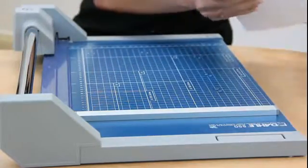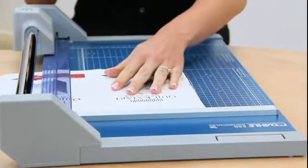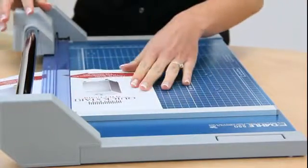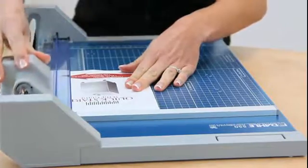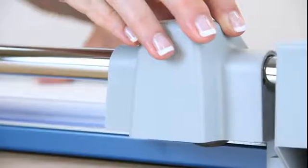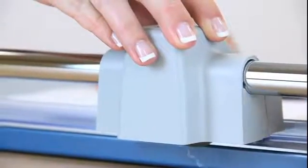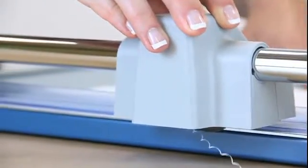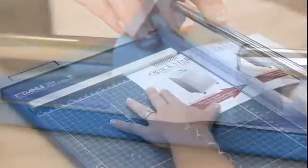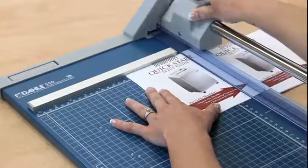These trimmers can cut up to 20 sheets at a time and feature a self-sharpening cutting system. No need to worry about replacing dull or worn blades - this system sharpens as you cut to maintain a perfectly honed edge.